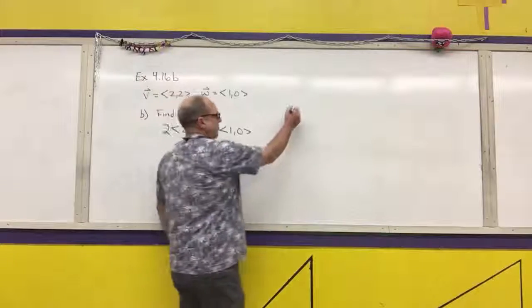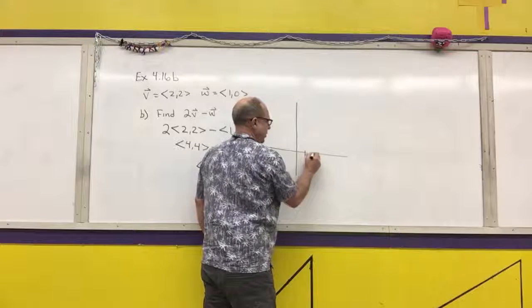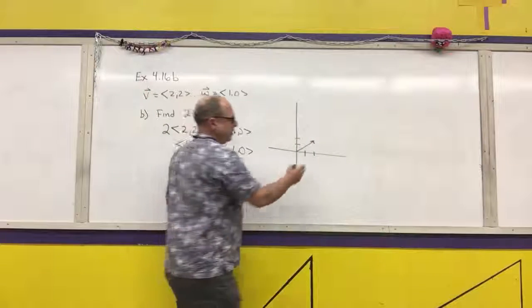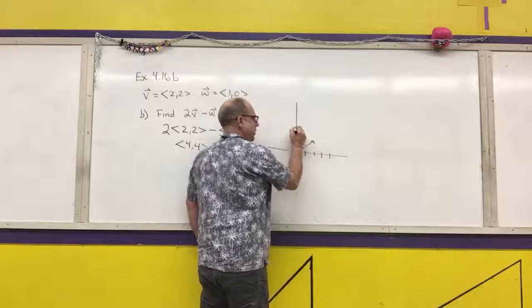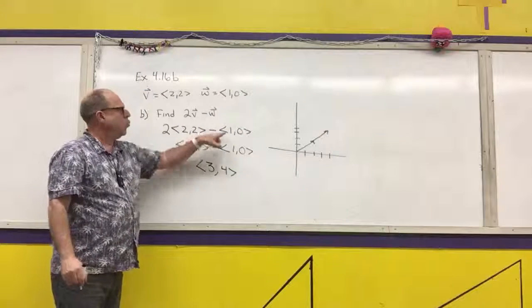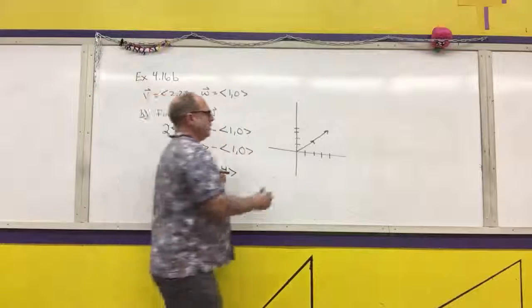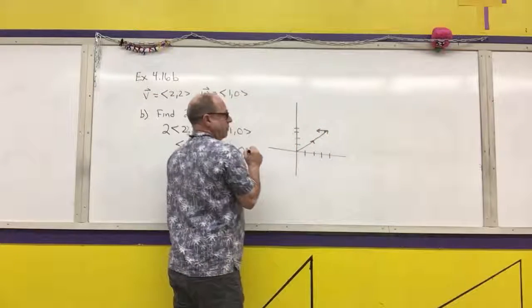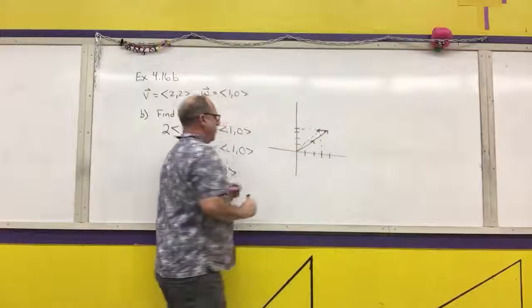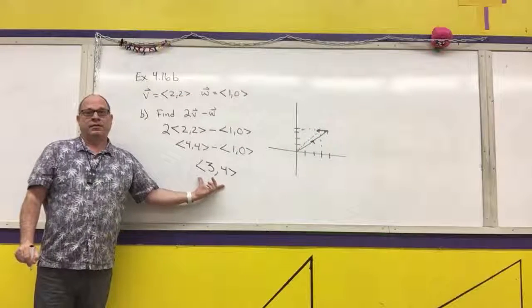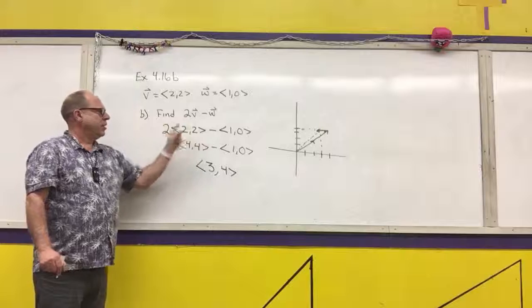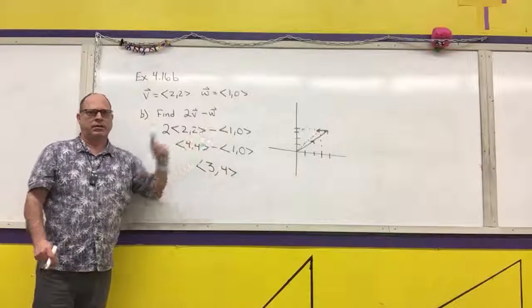Drawing on a coordinate plane: the original v vector doubled gives 2v, then subtracting w means going 1 to the left and 0 up — that's negative w. The resultant vector ends at ⟨3, 4⟩, confirming the answer. For vector operations with scalar multiplication, make sure x-components go with x-components and y-components go with y-components.